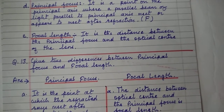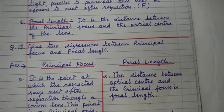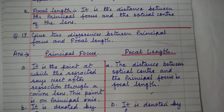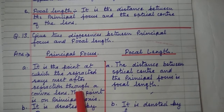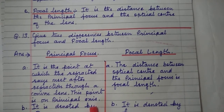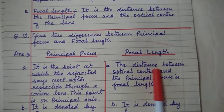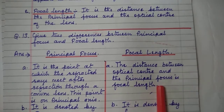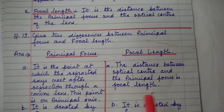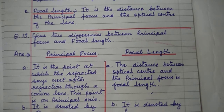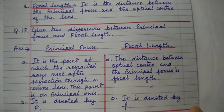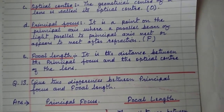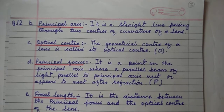Give two differences between principal focus and focal length. Principal focus is the point at which the refracted rays meet after refraction through a lens — this point is on the principal axis. Focal length is the distance between the optical center and the principal focus. Principal focus is denoted by capital F, whereas focal length is denoted by small f.